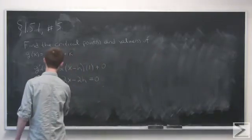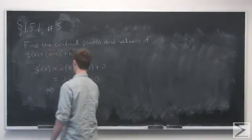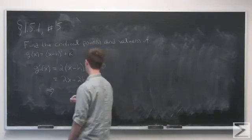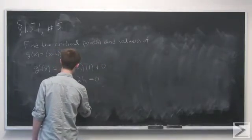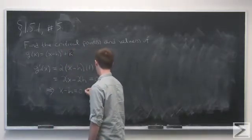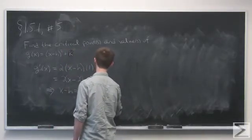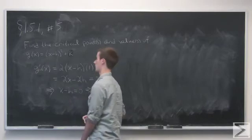Then we can cancel out 2 from each side. So that gives us x - h = 0, which says that x = h.